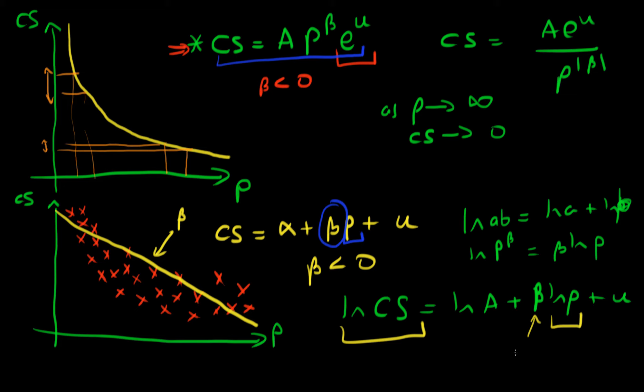So what does β represent in this log model? Well it represents the elasticity of demand, it represents the percentage change in car sales for a one percent change in price.